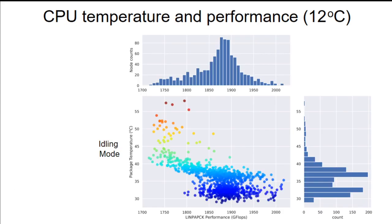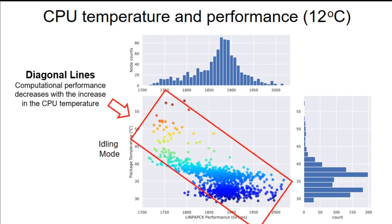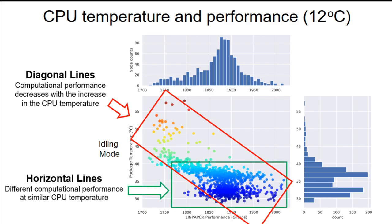And this graph shows the correlation plot between the LINPACK performance and the CPU packet temperature during the idle mode. So the actual temperature during the LINPACK execution is much higher. And if we trace some diagonal lines within this red rectangle, we can select the CPUs that decrease the computational performance following the increase in the CPU temperature. However, by tracing horizontal lines within this green box, we can also verify that there are several CPUs with different performance even at similar packet temperature.